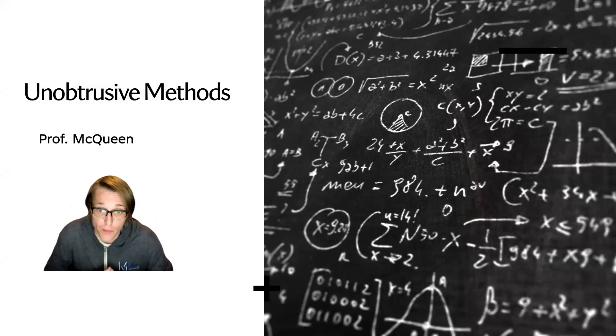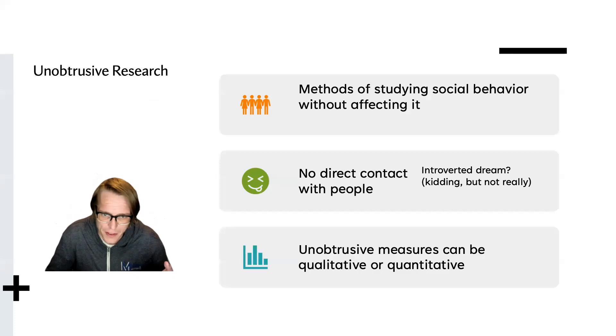In this lecture, we will cover a few different types of unobtrusive research in addition to secondary analysis that we discussed in the previous lecture. Unobtrusive research is a method of studying social behavior without being involved or impacting it. We do not directly contact participants through this research. Unobtrusive measures can be qualitative or quantitative, depending on if we are looking for numbers or in-depth information.